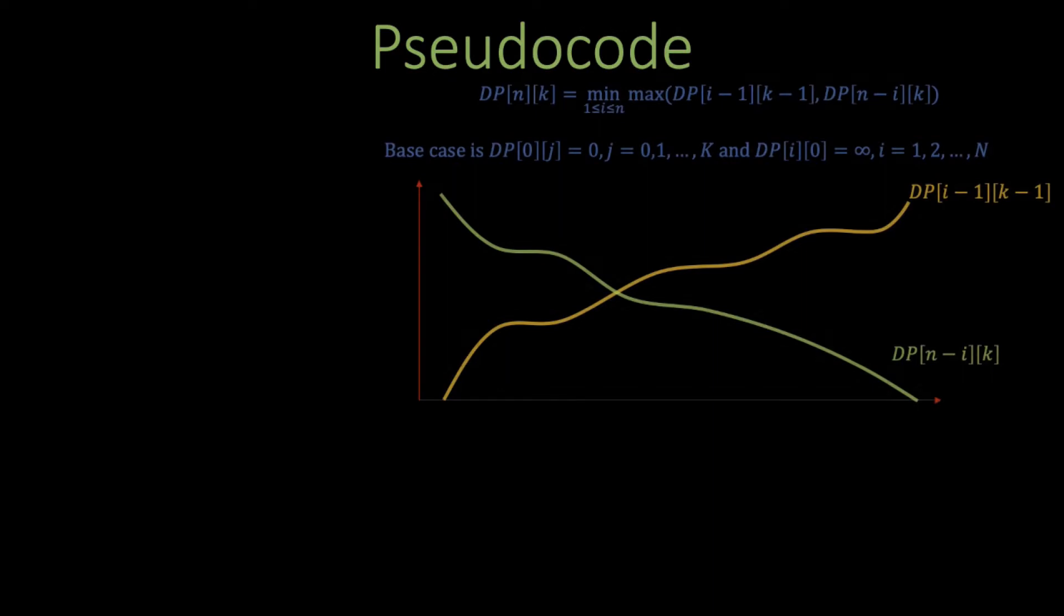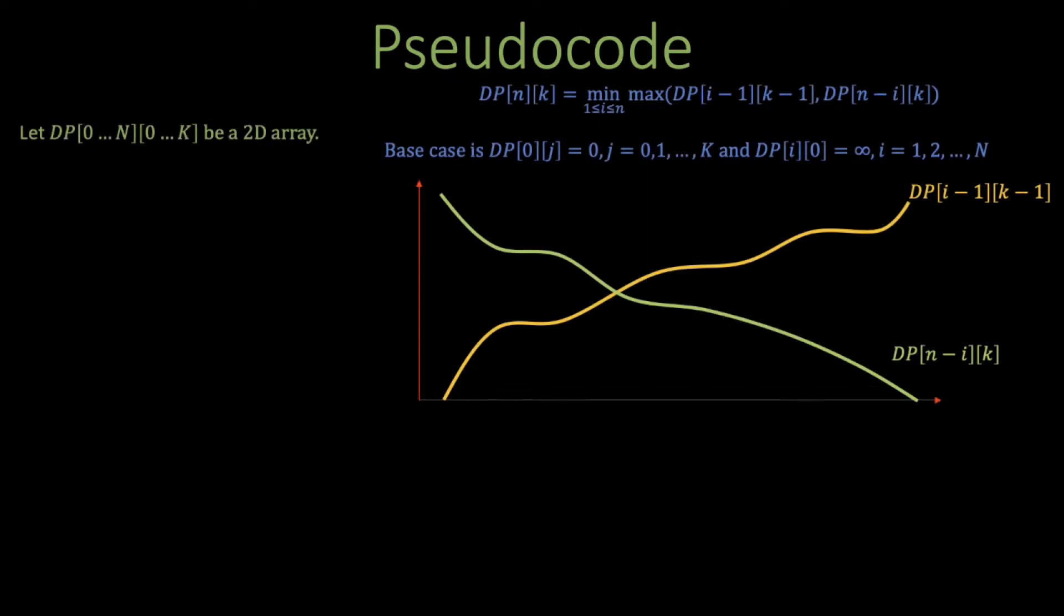Here is what the pseudocode looks like. I'll leave the recurrence as well as the diagram here to help you get a better idea of the algorithm. First, we'll initialize a 2D array of size (n+1) by (k+1). We will handle the base cases of DP[i][0] and DP[0][j] as discussed in part 1 of this series. Next, we will loop over all possible k and n.